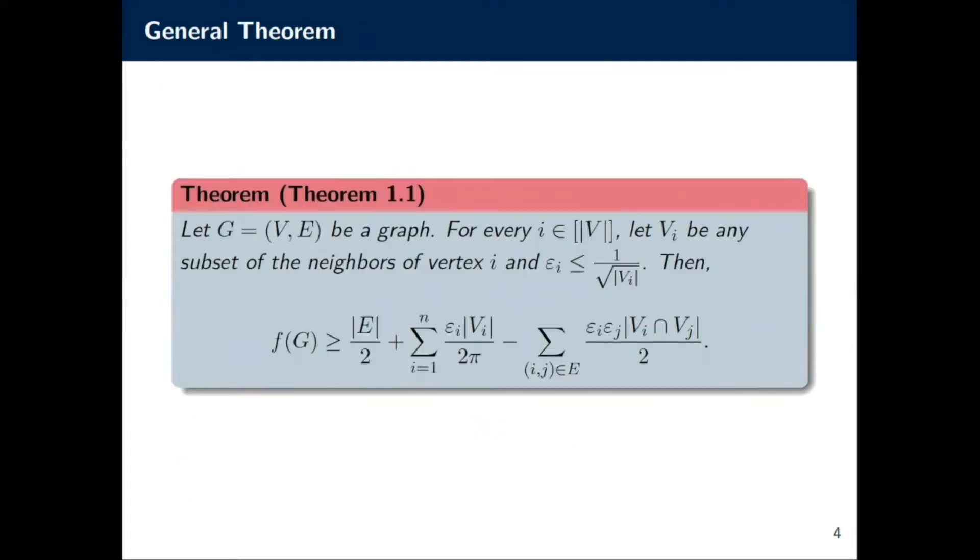This brings us to our first result, Theorem 1.1. This theorem is used to produce many of our other results and shows an interesting insight into how we can generalize known results. In this case, what we say is that if you have a graph G, such that for every vertex you can assign it a subset of its neighborhood, and you can construct an epsilon_i that is strictly less than or equal to 1/√|V_i|,